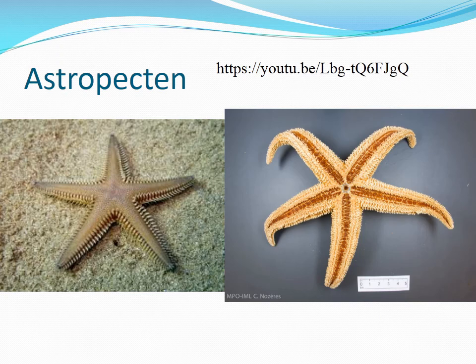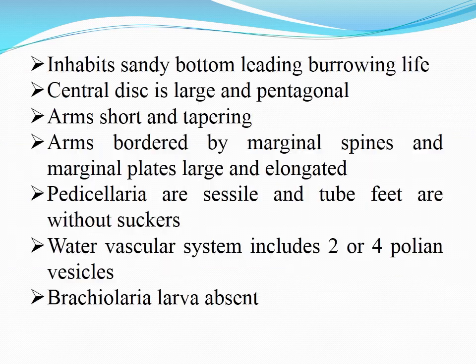Example: Astropecten and Asterias. The oral side bears the mouth and tube feet arranged in the ambulacral groove; the aboral side is the dorsal view. Astropecten inhabits sandy bottoms and leads a burrowing life. The central disc is large and pentagonal, arms are short and tapering, bordered by marginal spines and plates. Pedicellariae are sessile, tube feet lack suckers, and the water vascular system includes two or four polian vesicles. The larval stage is bipinaria; brachyolaria larvae are absent.